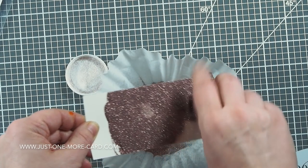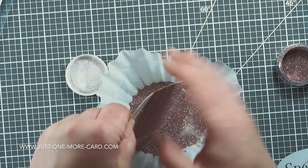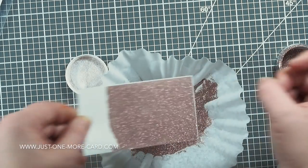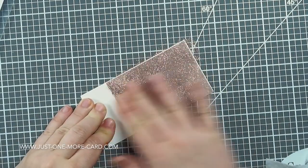I have a piece of cardstock here, and I adhere double-sided adhesive to one side, because I want to put glitter on it. This is Elizabeth Crafts glitter in the color Vintage Pink, and all supplies are, as always, linked in the description below.